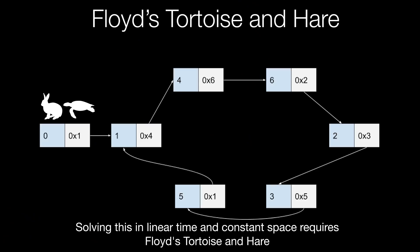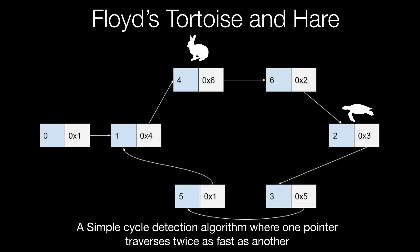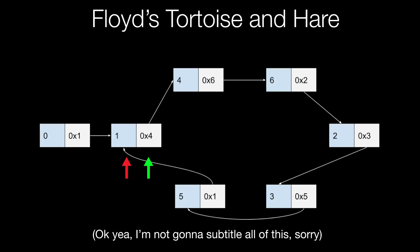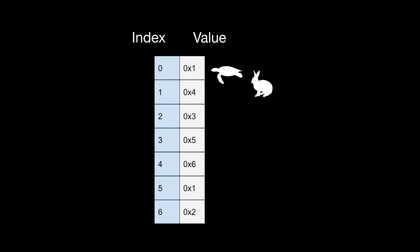Solving this in linear time and constant space requires Floyd's tortoise and hare, a simple cycle detection algorithm where one pointer traverses twice as fast as another. And once they meet, you can trace back to the point where the cycle began. In our case,